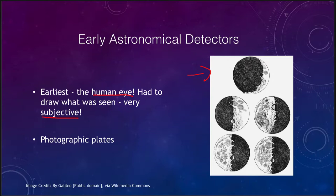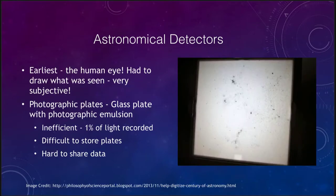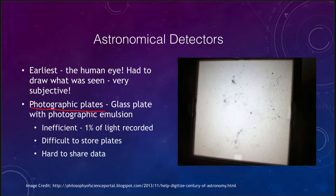These were then replaced by the photographic plate. Compared to the eye, photographic plates were much less subjective because they were a permanent record. The photographic plate is essentially a glass plate with a photographic emulsion on it. These were much better than the human eye — significantly better because they were a very objective measure. There was nothing left to the interpretation of the person doing the drawing, so people could study the same object and get essentially the same image.